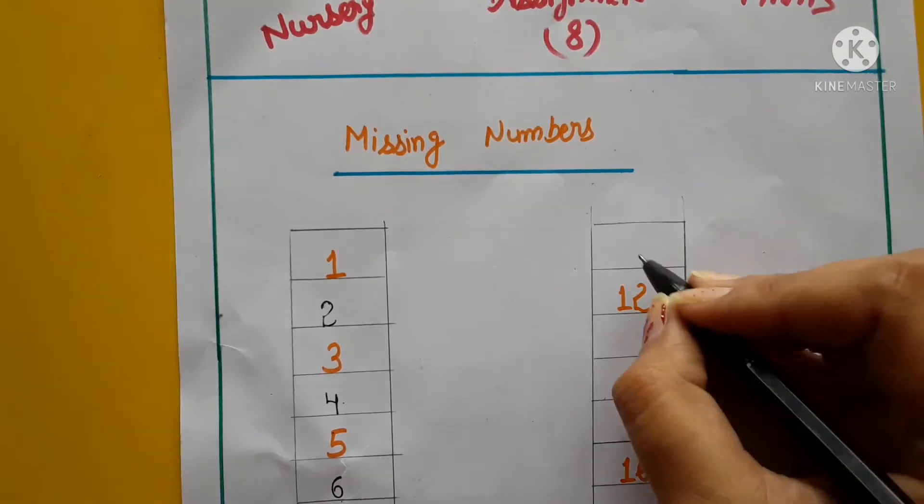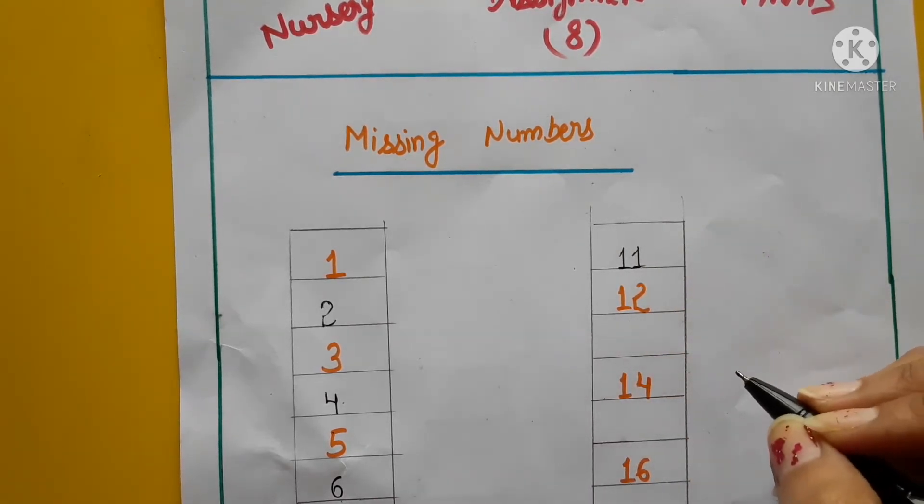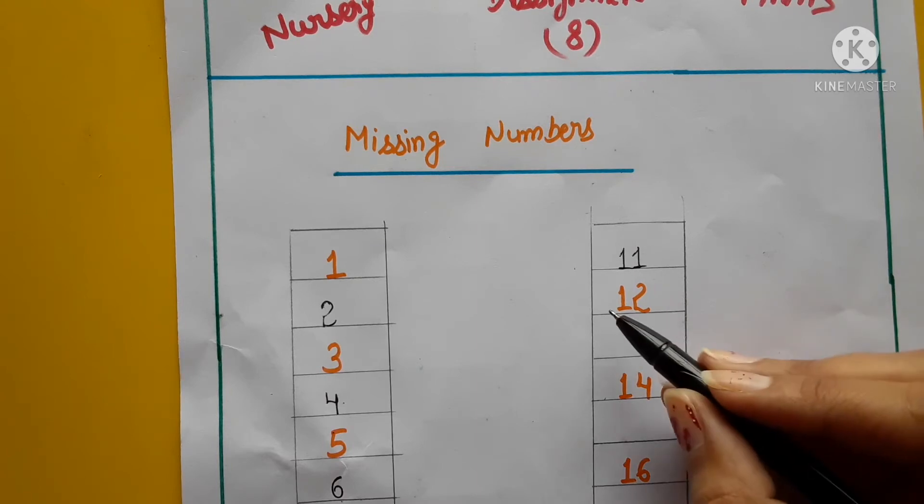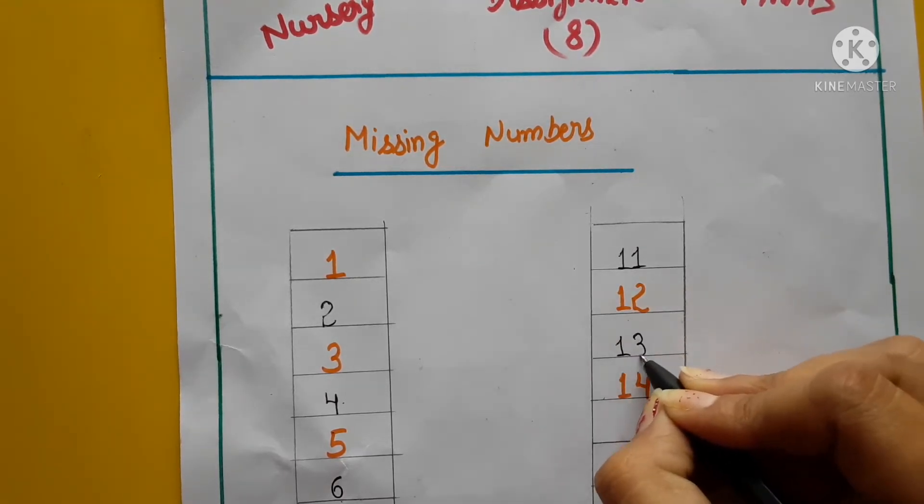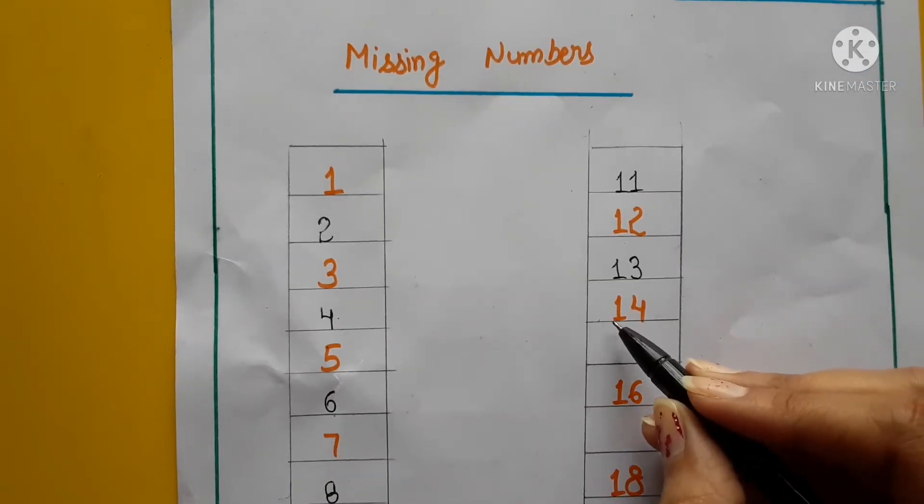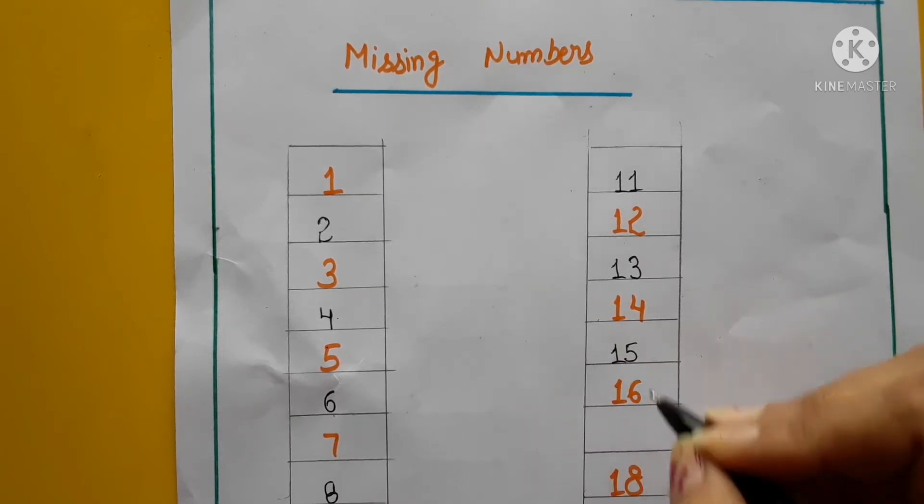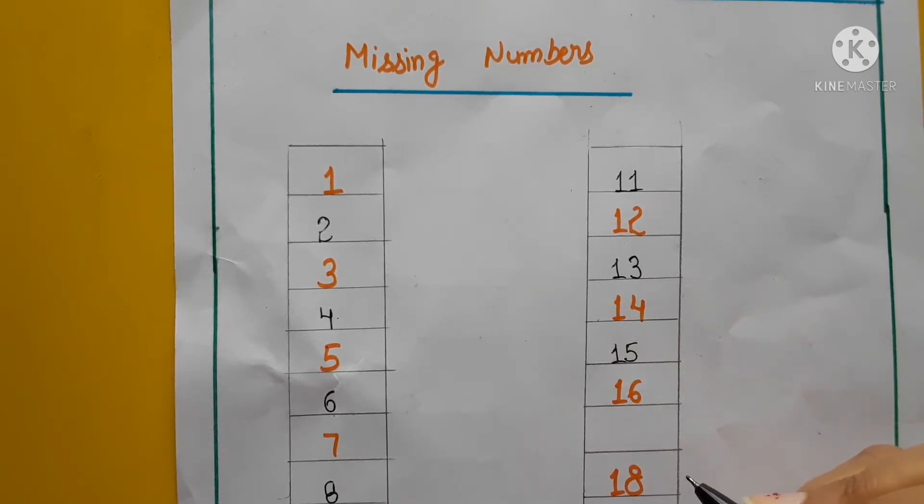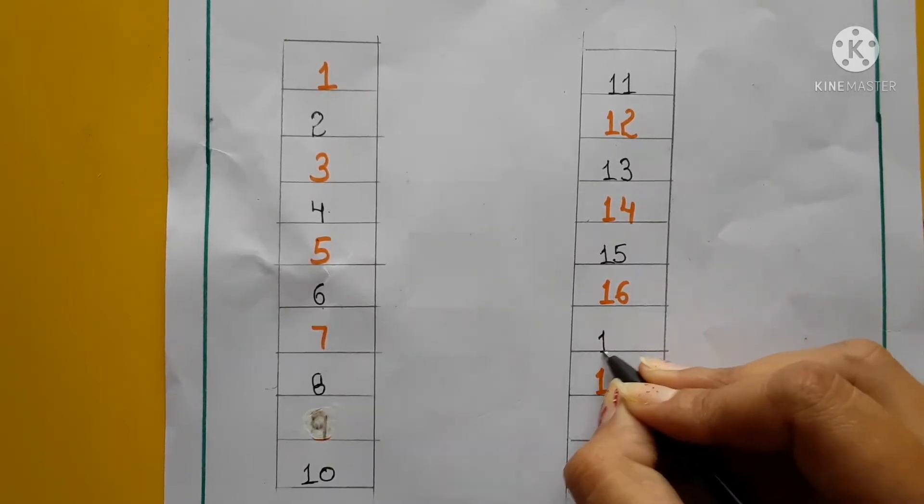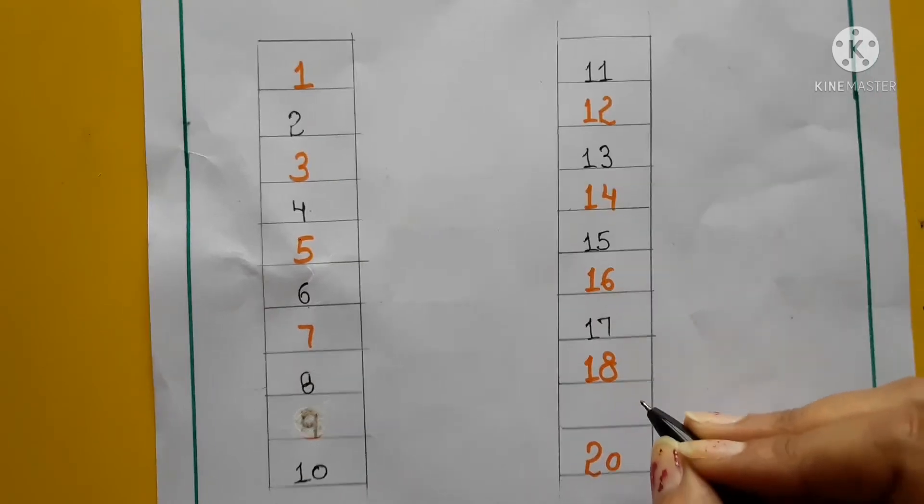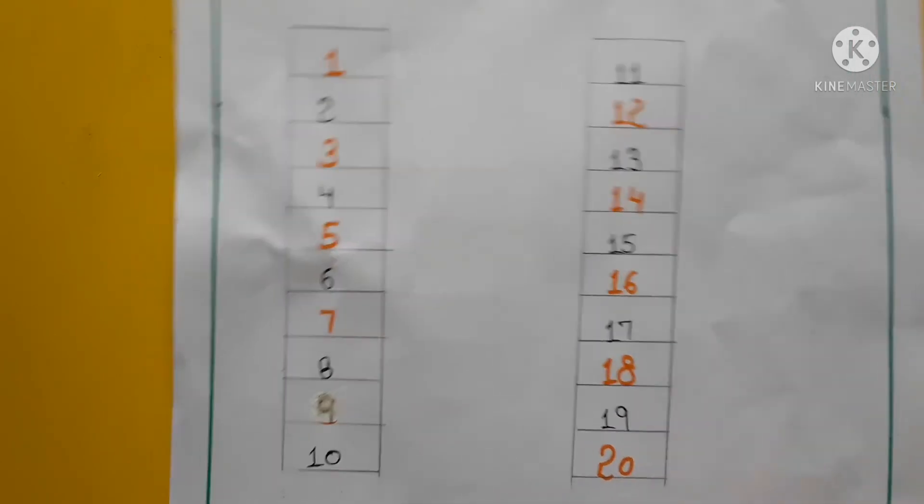10 ke baad kya aata hai? Abhi bhi kiya hai na haomne. 1, 1, 11. 10 ke baad kya aata hai? 11. Or uske baad kya aata hai? 1, 2, 12. Then 1, 3, 13. Uske baad 1, 4, 14. And 1, 5, 15. Yaha pe 15 aata hai, theek hai? Uske baad mention hai yaha pe 1, 6, 16. And uske baad kya aata hai? 1, 7, 17. Or 18 mention hai. Uske baad 1, 9, 19, 2, 0, 20.